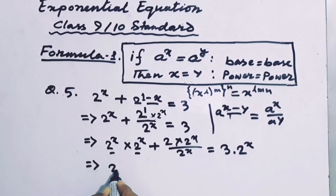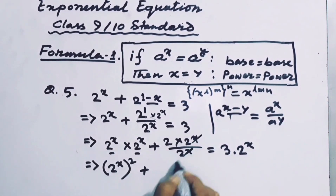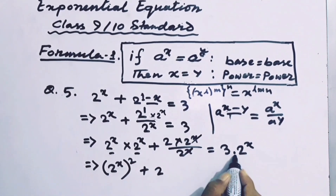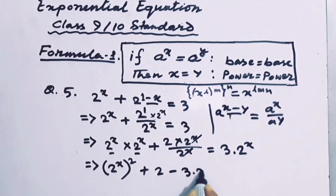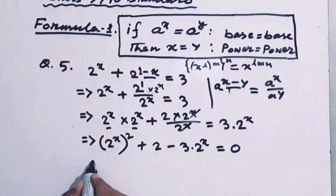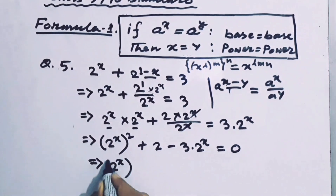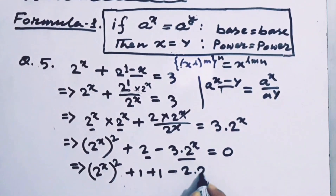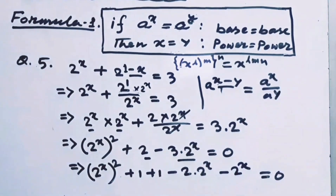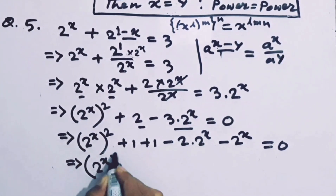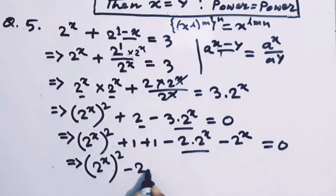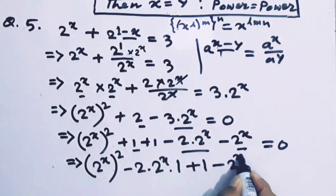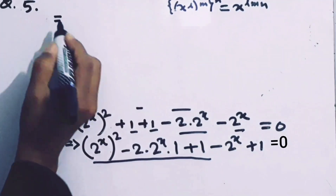We get 2ˣ times 2ˣ plus — crossing out the 2ˣ terms, remaining 2 — then from right to left, minus 3 times 2 to the power x equals 0. This implies 2 to the power x, full square. Here we write 2 as (1 plus 1), and 3 times 2ˣ as 2 to the power (x plus 1), giving us 2 to the power 2x, then minus 2 to the power (x plus 1).